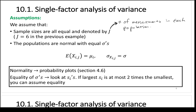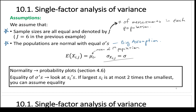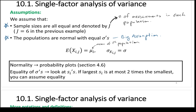The populations are assumed normal with equal standard deviations — that's a big assumption. Same sample size for every population, and all populations have the same standard deviation. The expected value of x-ij for the i-th population is mu-i, the mean of population i. The variance of any population is just sigma.